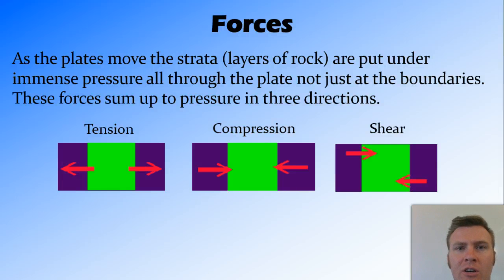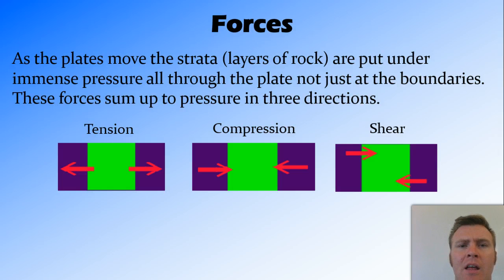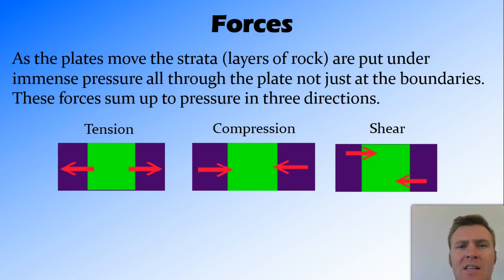The forces that occur inside the plates are the same forces as those that occur at the edges of the plates, caused by those forces at the edge. But because the plates aren't perfect shapes — not perfect squares — different spots throughout the plate can have different forces occur in it. And as the plate gets twisted and warped, you can have different forces across the plate.